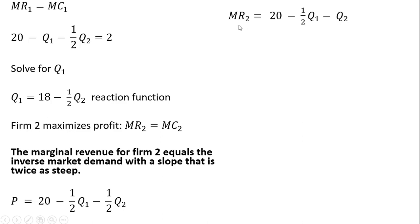So firm 2's marginal revenue is the following. Setting that equal to marginal cost and this time solving for firm 2's output, we get the following result.